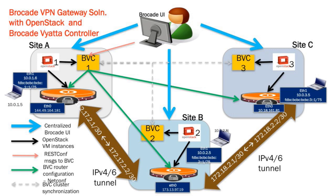You have the Brocade UI, which is the centralized UI that the operator or admin uses to provision all of the different VMs, control the vrouters, provision the tunnels, and so on. The admin initiates the OpenStack Horizon dashboard and through the dashboard creates instances for the Brocade Vyatta controller as well as the vrouter. That's what you see through the blue arrows and then the black arrows on screen — the spinning up of VM instances by OpenStack. Then you have the Brocade Vyatta controller and the vrouter up and running, which are used to configure the tunnels across the three sites.